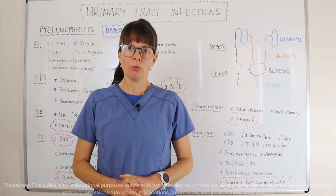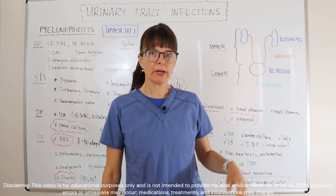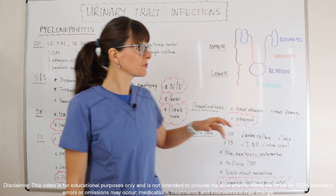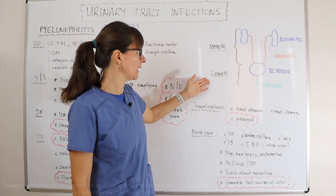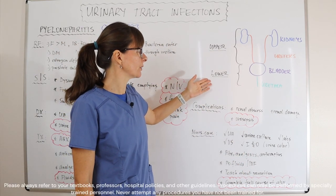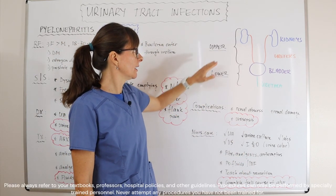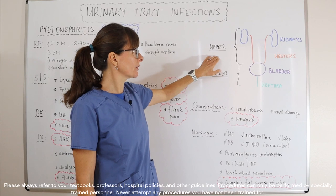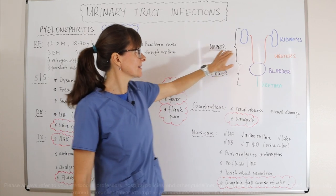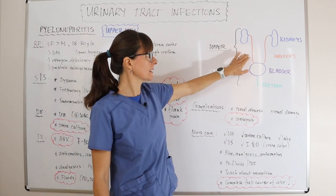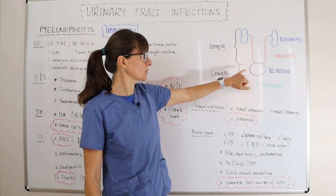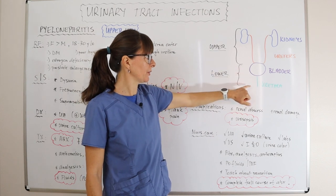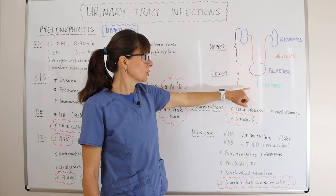When we look at the urinary tract, we have to distinguish between the upper and the lower urinary tract. The upper urinary tract contains the kidneys and the ureters, where the lower urinary tract contains the bladder and the urethra.